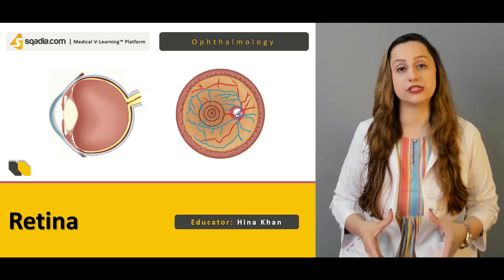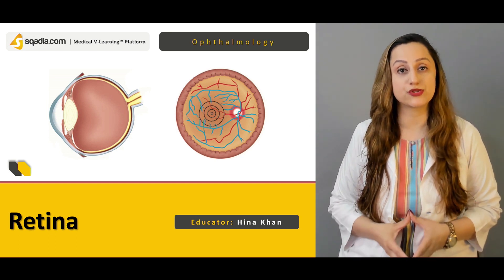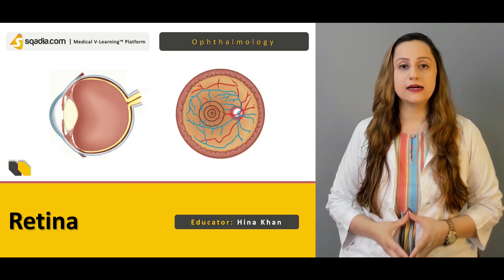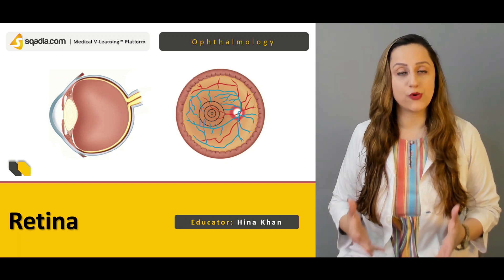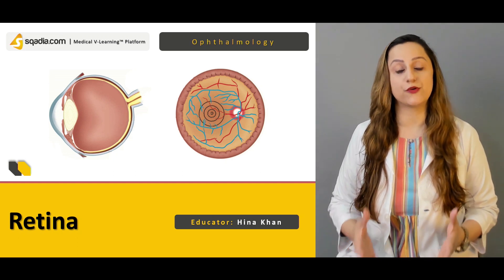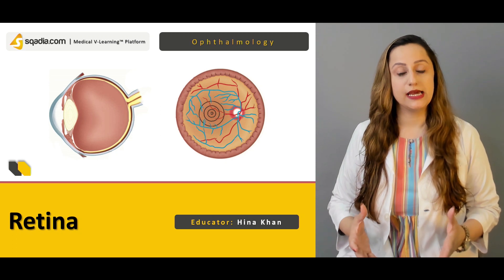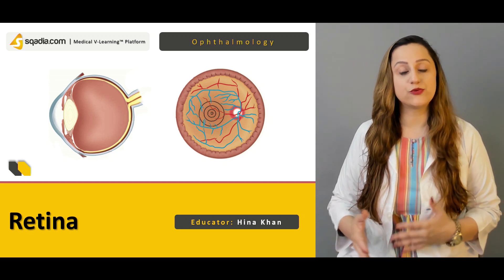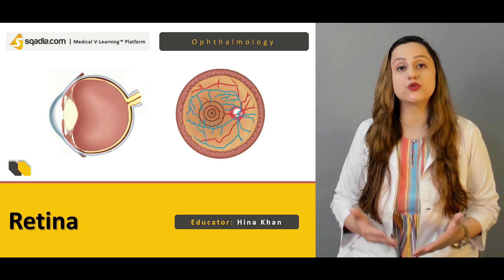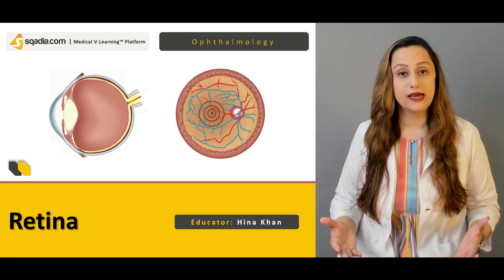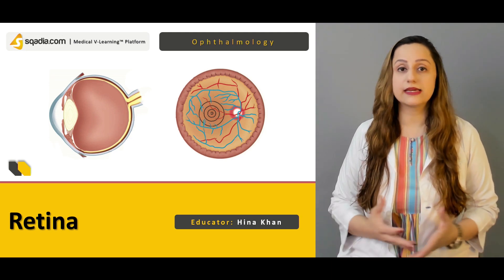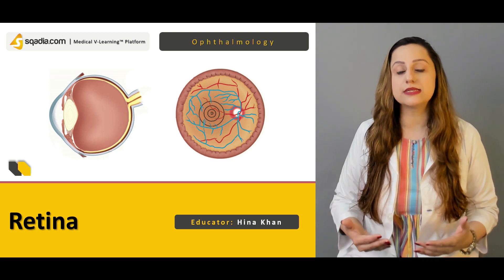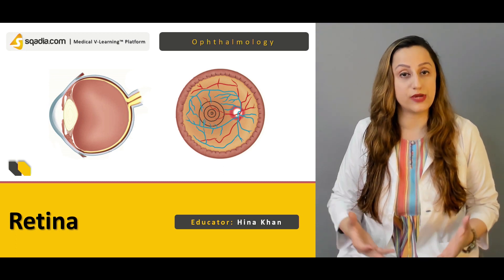The retina is a very important anatomical structure of the eyeball. It is basically a neurosensory organ and it is the end organ for vision. The main function of the retina is to relay messages to the visual cortex of the brain, which is responsible for the interpretation of images formed at the retina.